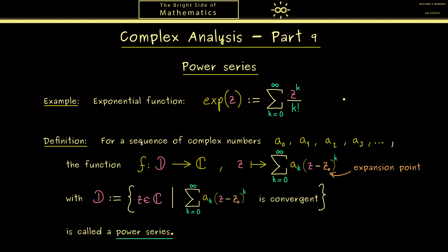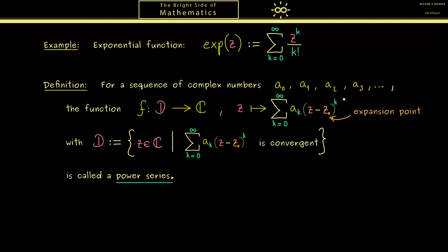With this knowledge I would say we look at an example. This is an important one and you already know it from real analysis. It's the famous geometric series. It's not complicated at all because all coefficients are just 1. Therefore we have the series that starts with k equals 0 of z to the power k.